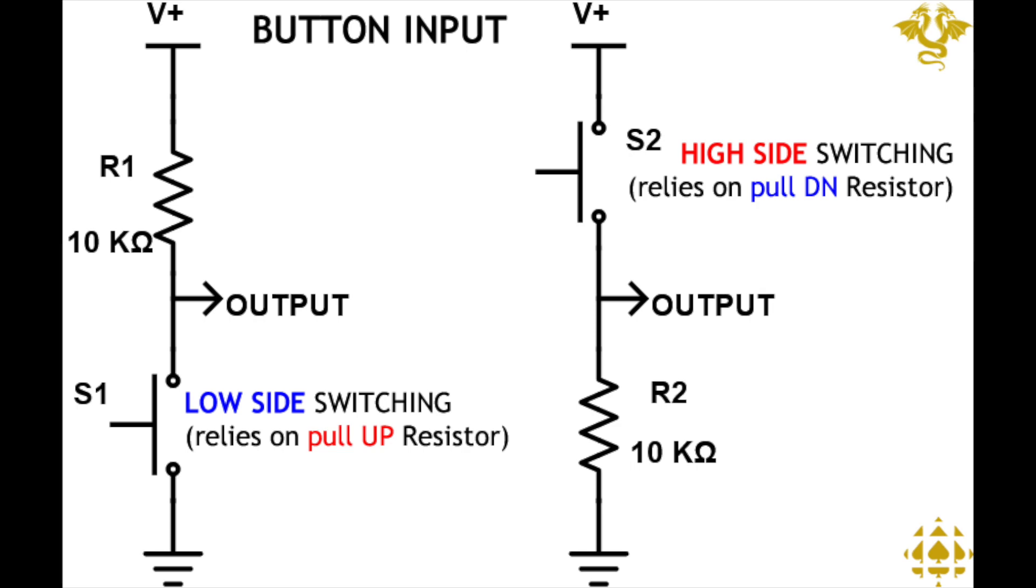When the pushbutton isn't pressed, the output is high, since V+ is providing current. However, when the pushbutton is pressed, the output is low, since there is a path to ground.